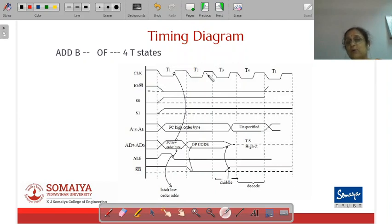T1, T2, T3, T4 are indicating T states. With respect to every T state, how the signals are changing is being shown on a graphical representation. That is what is known as a timing diagram.